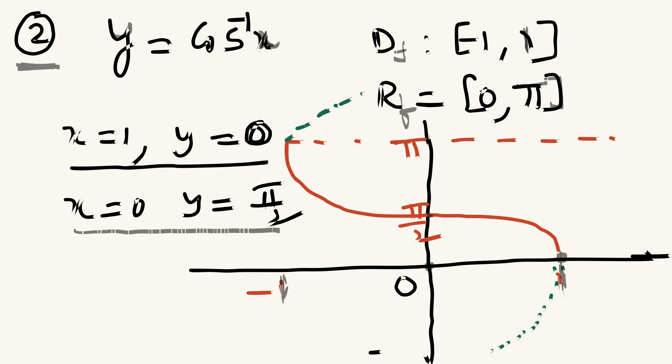The third point: if x = -1, then y = π, which is the maximum in the range. If we continue the graph above or below this, it fails the vertical line test and therefore it cannot be a function. So whenever cos⁻¹(x) is given, you should understand: domain is [-1, 1] and range is [0, π].